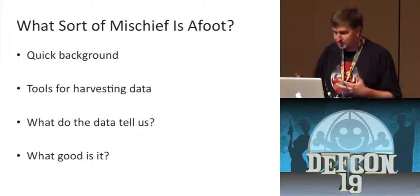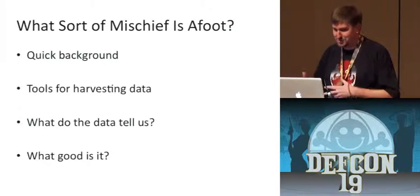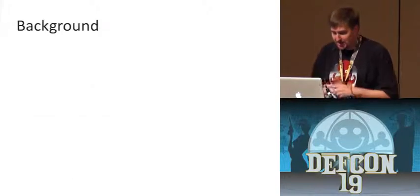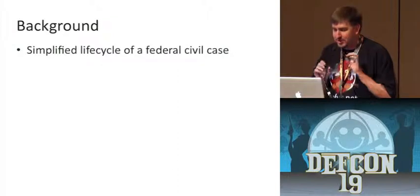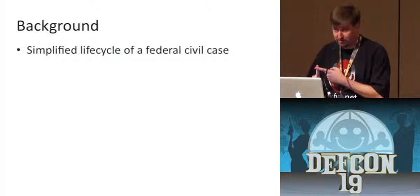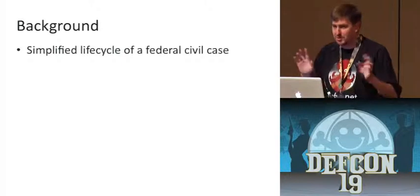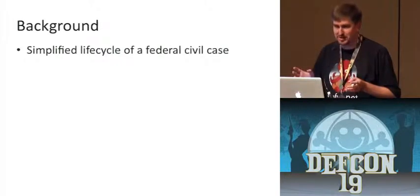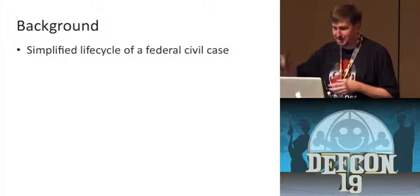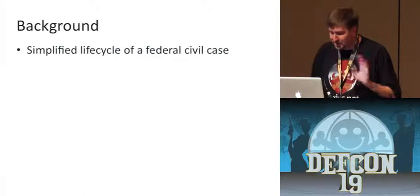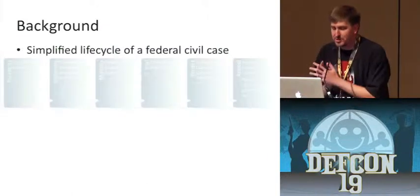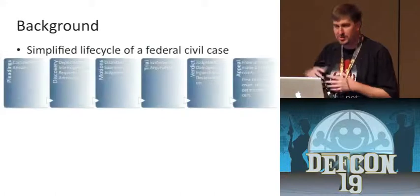Unfortunately, in order to get to that solution, we're going to have to do a little bit of law background. Civil procedure in one slide. We're only going to talk about civil cases — criminal cases are interesting, but nobody makes stock purchases based on criminal actions. The life cycle of a federal civil case starts off when someone gets mad and wants to sue someone else. That's called pleadings.